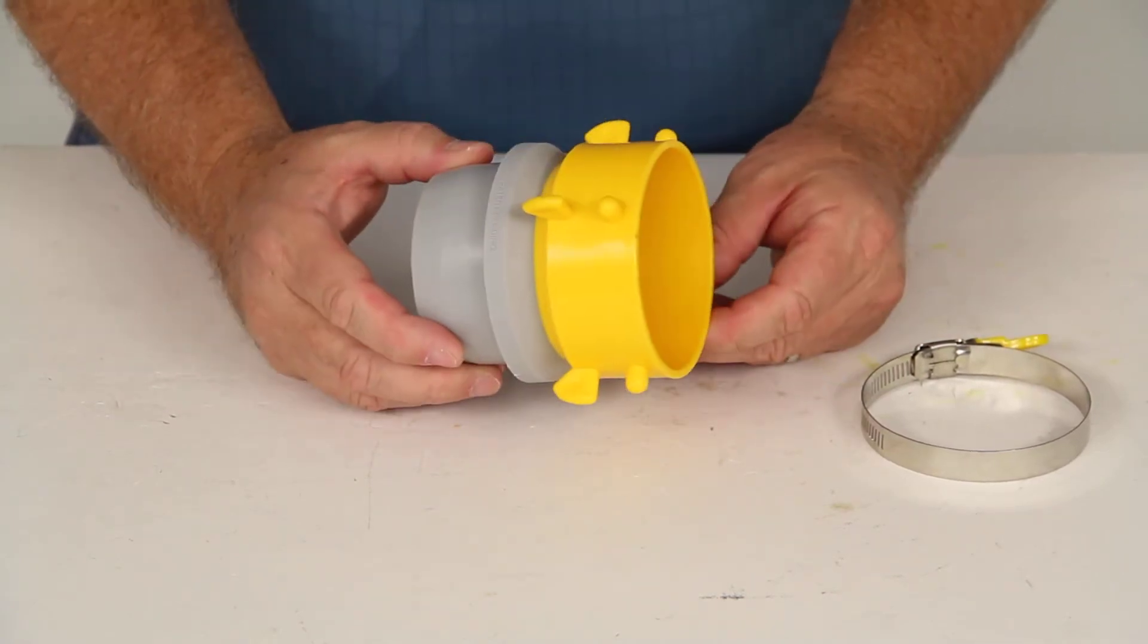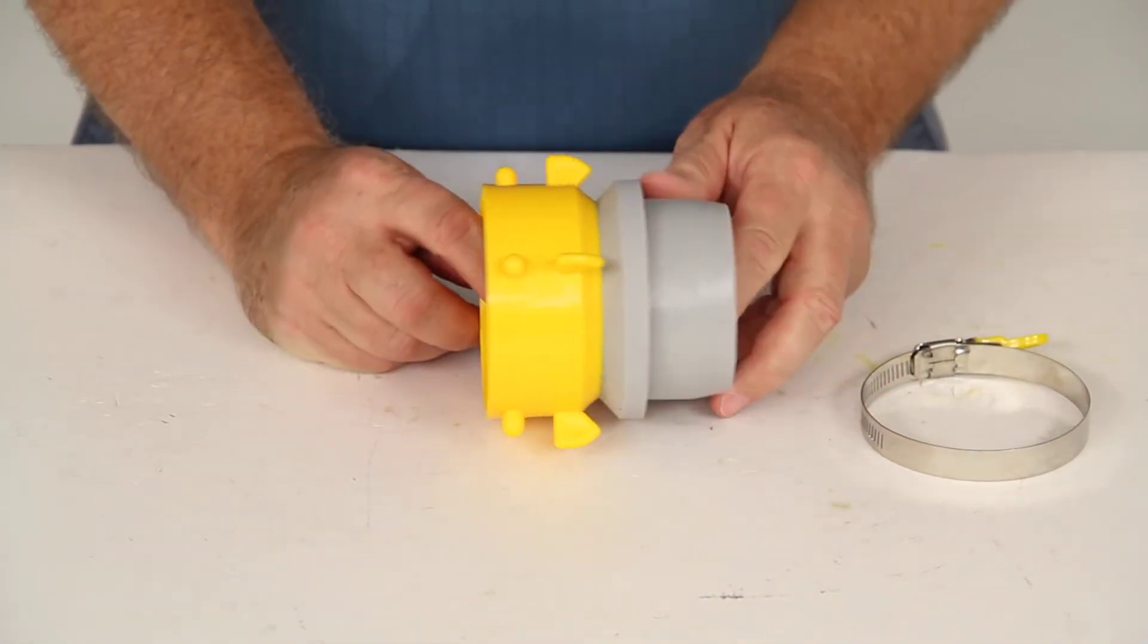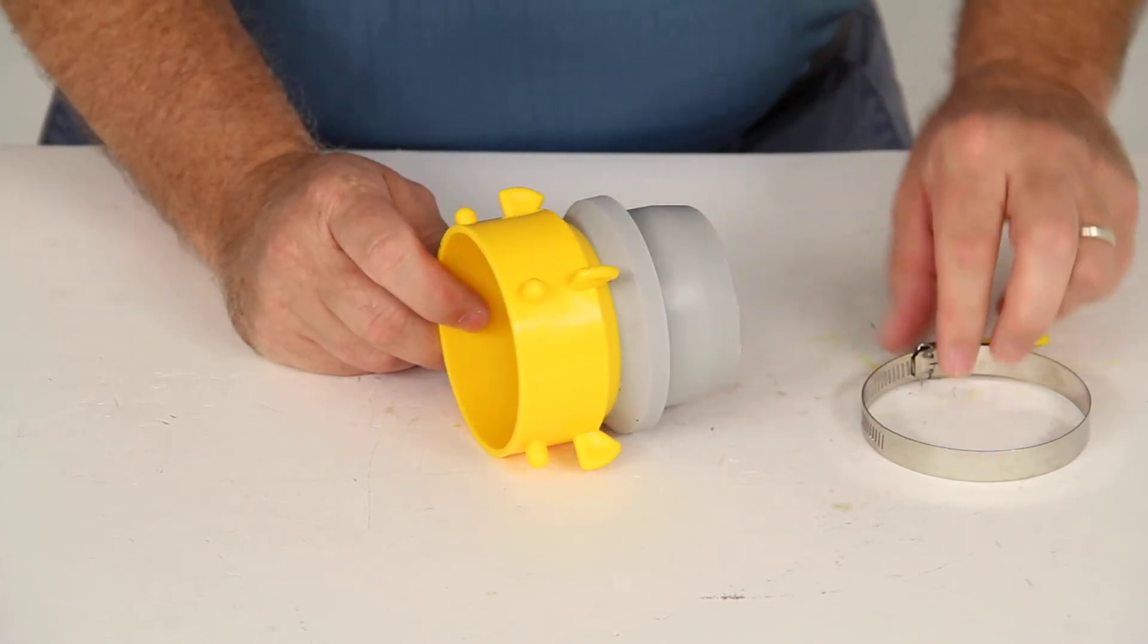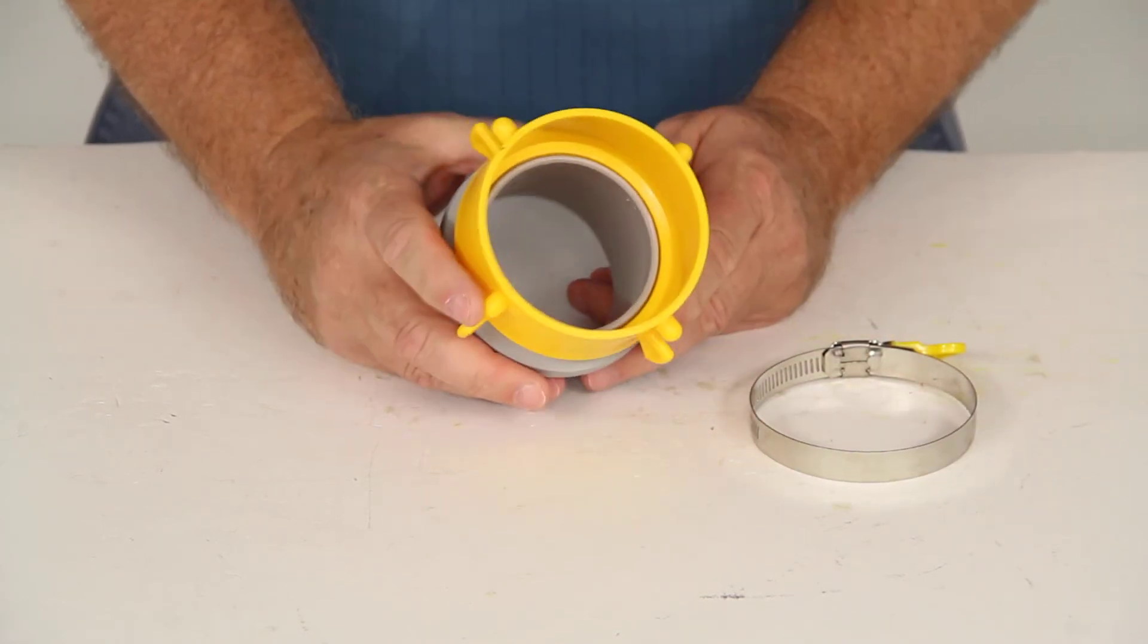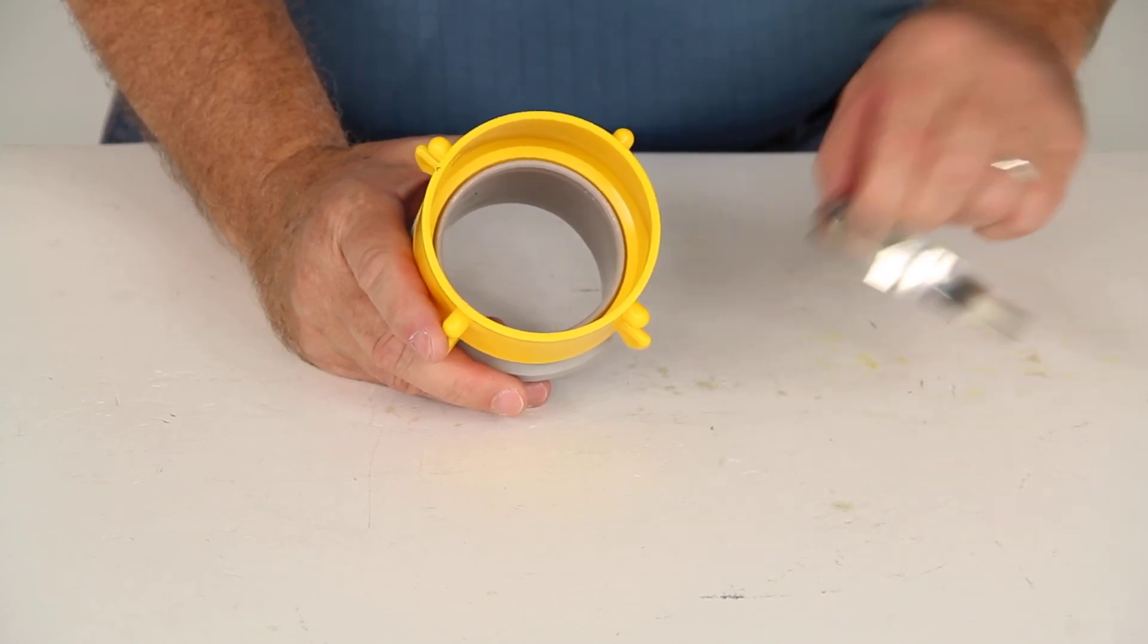That should do it for the review on part number CAM39491, the Camco Revolution RV Sewer Hose Swivel Lug Fitting with the twisted clamp.